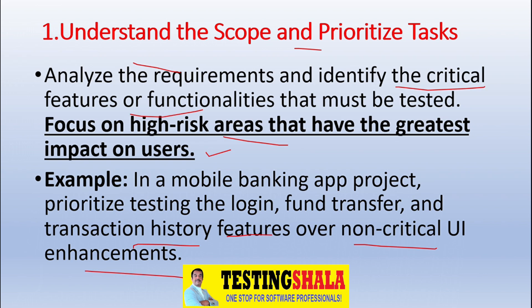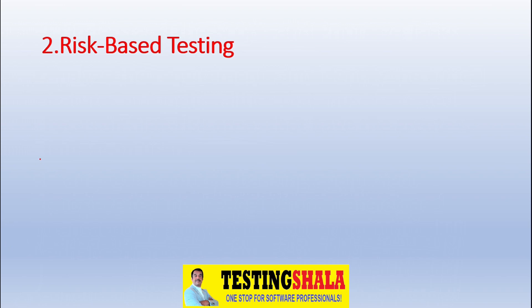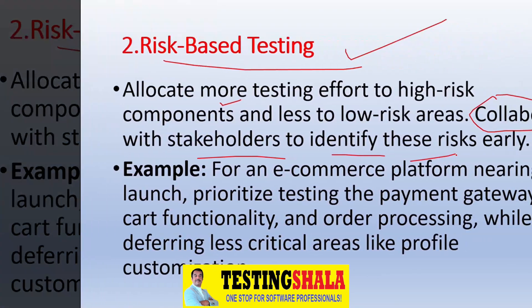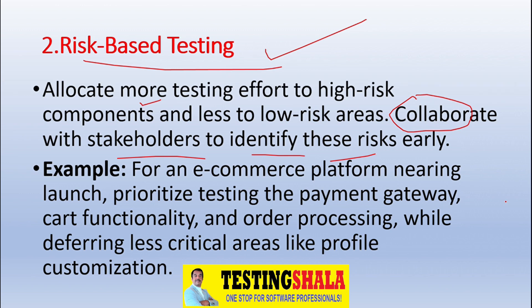The second step is risk-based testing, which is very important with limited resources — both human and hardware. We should allocate higher-risk components or modules to testers rather than low-risk areas. We can identify risks by working with stakeholders early. For example, on an e-commerce platform we should prioritize high-risk areas like payment gateways, core functionality, and order processing over less critical areas like profile customization.